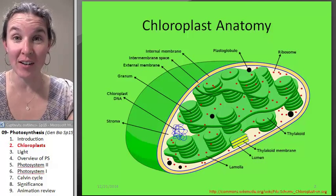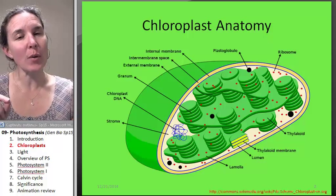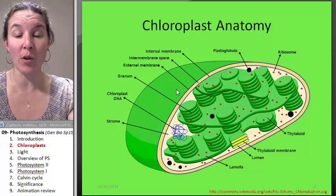Chloroplasts are the organelle where photosynthesis takes place. And just like we looked at the anatomy of the mitochondria, we're going to look at the anatomy, close-up anatomy of the chloroplast.